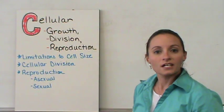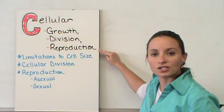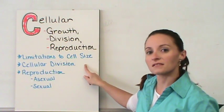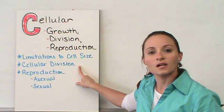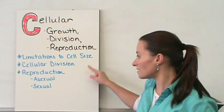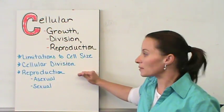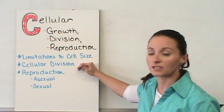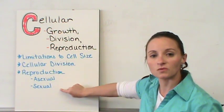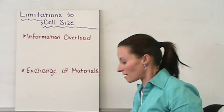Welcome to today's video lecture covering cellular growth, division, and reproduction. Today we're going to talk about the two major limitations to cell size and why cells can only be small. We're also going to talk about cellular division and how that relates to the limitations in cell size, and then talk about cellular reproduction — the two different types being asexual and sexual reproduction. So let's start with those limitations to cell size.